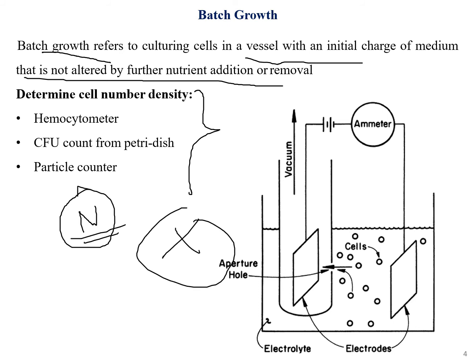To determine cell number N, there are three methods: hemocytometer, CFU count from petri dish, and particle counter. The hemocytometer is a grid-based tool — you count the number of dead and live cells in one square and multiply by four to find the average. CFU count involves counting the number of colonies from a petri dish, and the particle counter is another straightforward method.